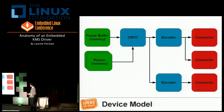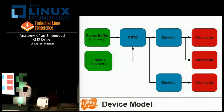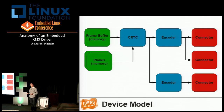Some encoders are simple — they just take digital signals and output signals compatible with a flat panel. Some are much more complex and need to be controlled precisely by userspace. On the far right you have connectors. KMS started as an x86 PC API where you have a graphics card with connectors to get signals out. A connector can be a physical connector or just an interface on the board to a real flat panel.